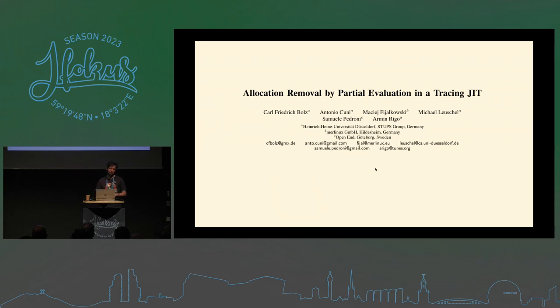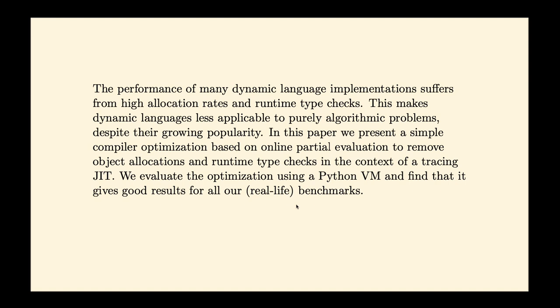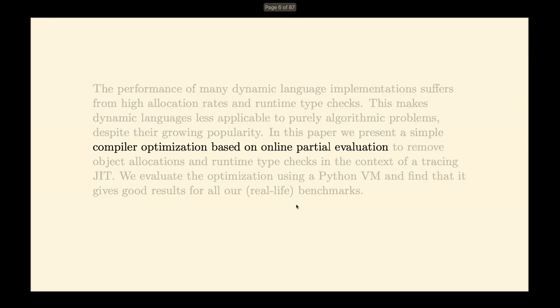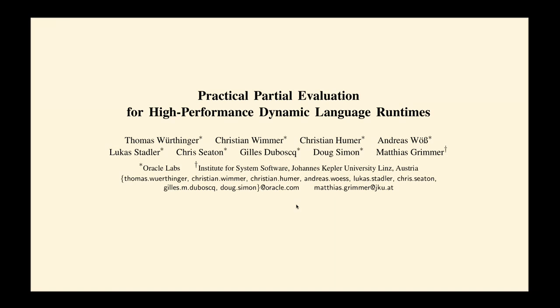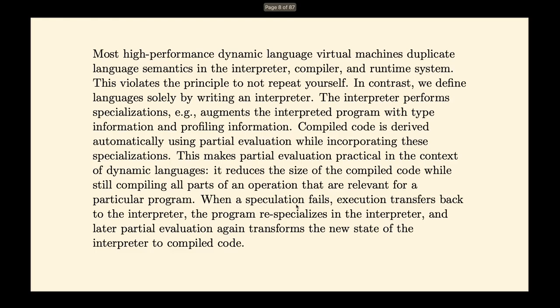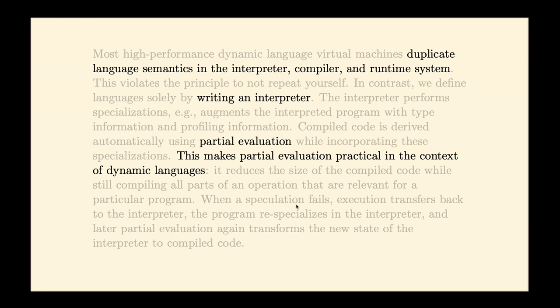I want to mention a couple of papers. One is 'Allocation Removal by Partial Evaluation and Tracing JIT.' The abstract talks about how complicated it is to properly implement dynamic languages — languages that are typed at runtime — and they present compiler optimization based on online partial evaluation. Another paper, 'Practical Partial Evaluation for High Performance Dynamic Language Runtimes,' tells you that most high-performance dynamic language virtual machines need to duplicate the language semantics in order to be efficient.